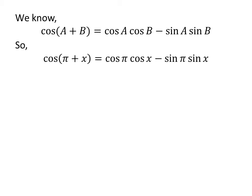Let us apply the above identity for cosine of pi plus x. Here, A is pi and B is x. So cosine of pi plus x is equal to cosine of pi times cosine of x minus sine of pi times sine of x.